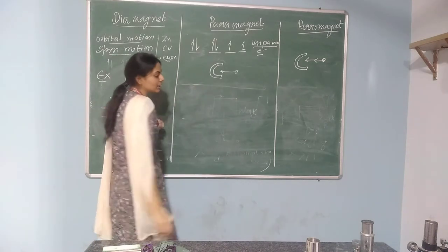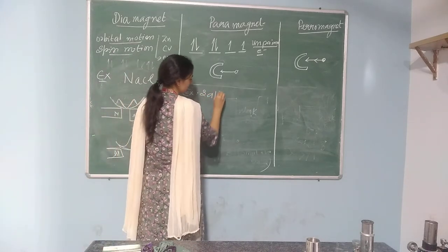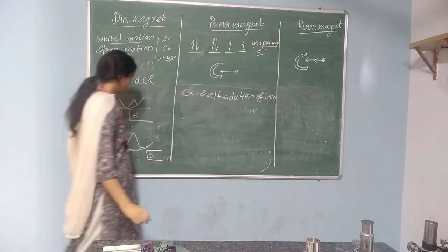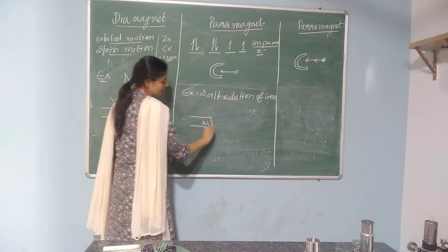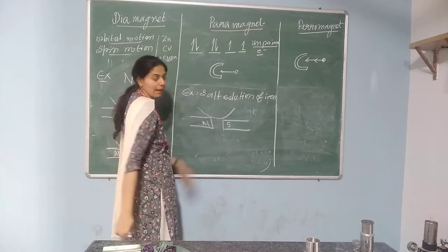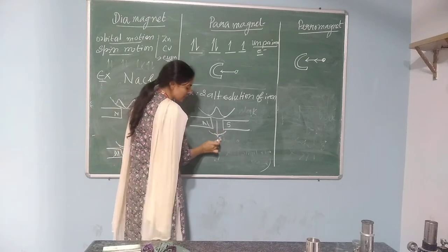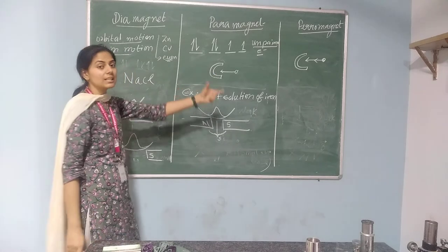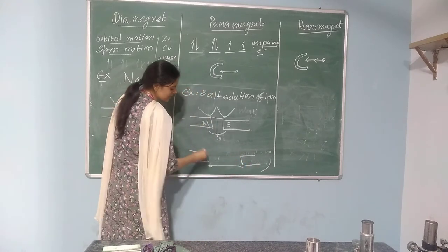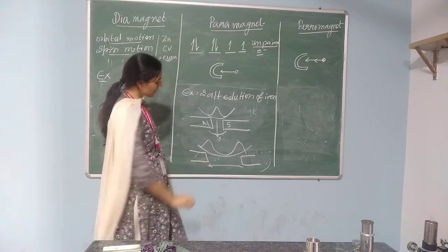In the case of paramagnetic material, the example is salt solution of iron. The totally opposite case happens here. If north and south pole magnets are applied and the salt solution of iron is kept in a petri dish, they tend to accumulate in the middle when the magnetic field strength is greater in the middle. If the two bar magnets are kept apart by some distance, they tend to accumulate at the sides, because now the magnetic field is more at the poles.